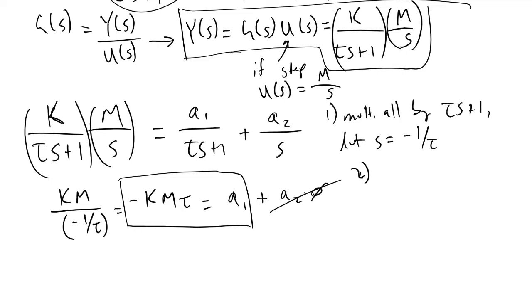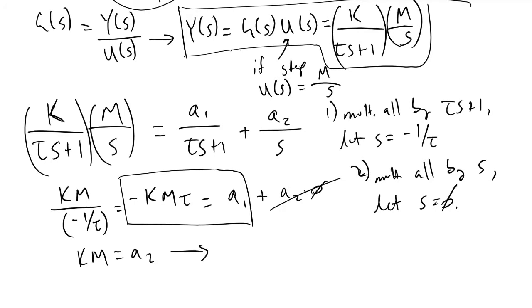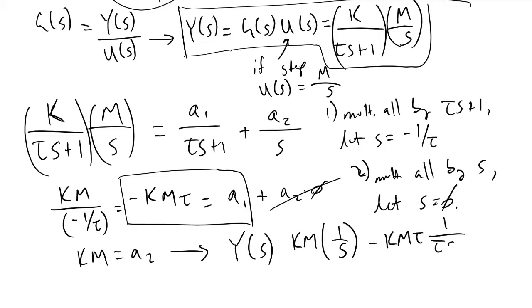We have now redefined Y(s) algebraically as individual fractions easier to invert: Y(s) = km·(1/s) − kmτ·(1/(τs + 1)).